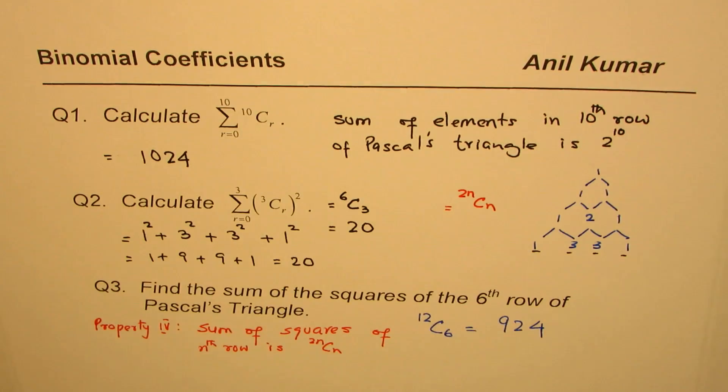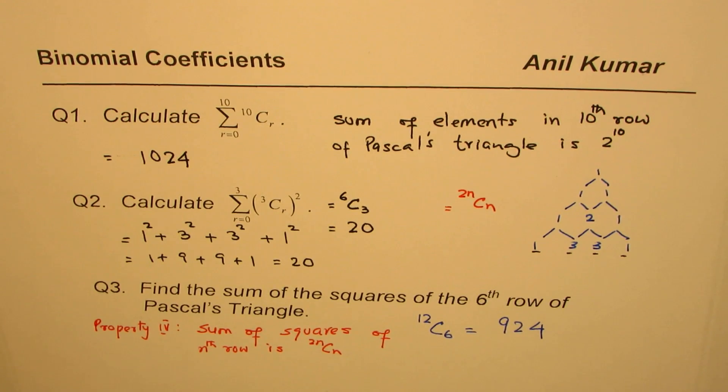So you don't have to now build up a Pascal's triangle as we did to the 6th row, square them and add. So that is the best way you can do it. It's so fast. And I hope now you appreciate why we are trying to link Pascal's triangle with binomial coefficients. Now we have a formula to work with.